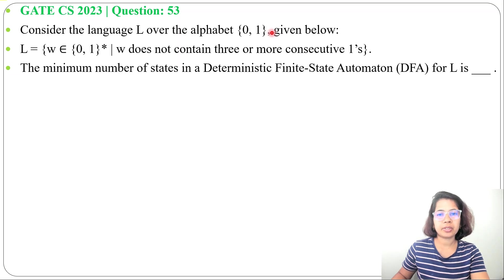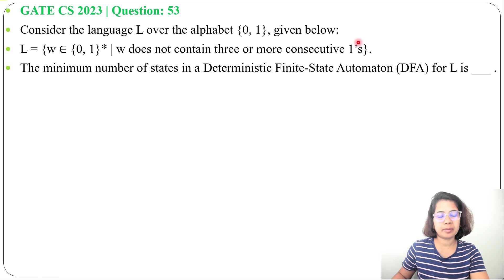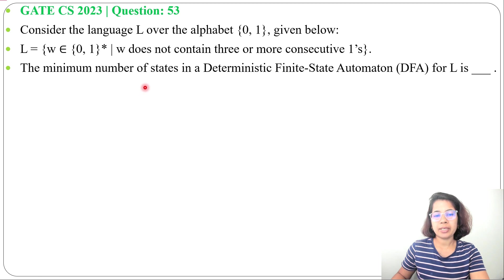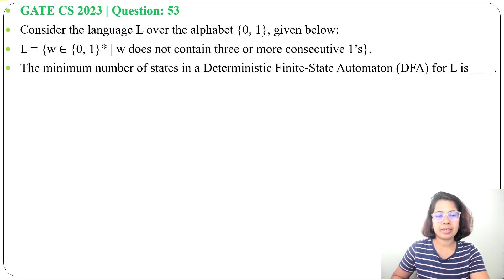Let's solve a previous question on Theory of Computation. This question was asked in GATE CF 2023, question number 53. Consider the language L over the alphabet {0,1}: L equals the set of strings W in {0,1}* such that W does not contain three or more consecutive ones. The minimum number of states in the Deterministic Finite Automaton (DFA) for L is asked.